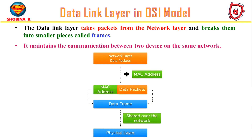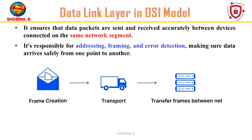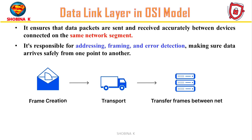It is like dividing a big parcel into smaller packages for easy handling. The main job of the data link layer is to handle addressing, packaging data into manageable chunks, and checking for any errors to ensure safe delivery. So the data link layer plays a crucial role in ensuring reliable and efficient communication between devices within the same network.